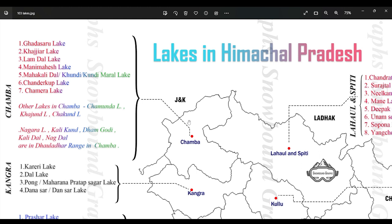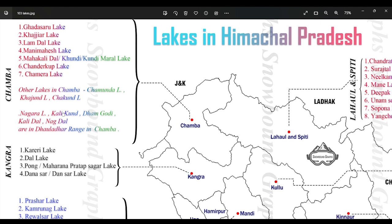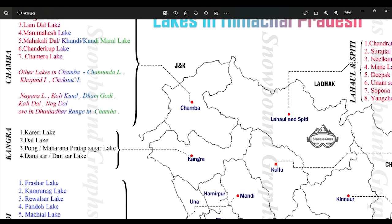Chura Valley is located around somewhere here. Next one is Chandarkoop Lake, which is also in the upper reaches of Chamba towards Dharamshala in the Dhauladhar Range. The last major lake in District Chamba is Chamera Lake, which is formed due to the formation of Chamera Hydroelectric Project near Chamera village. Some other minor lakes in District Chamba are Chamunda Lake, Khajund Lake, Chakund Lake, and Nagara Lake, all in the Dhauladhar Range.